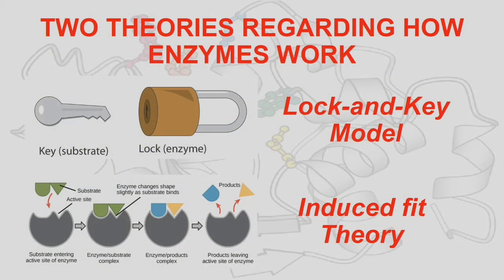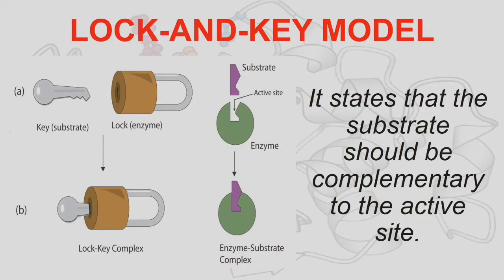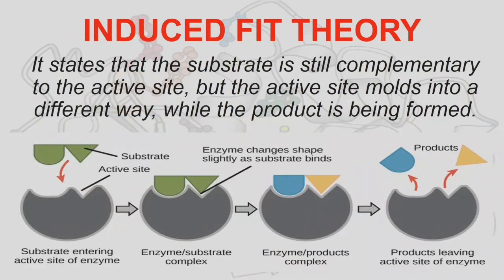We have two theories regarding how enzymes work: the lock and key model and the induced fit theory. The lock and key model states that the substrate should be complementary to the active site — proposed based on the fact that enzymes are very specific for the substrate. In the induced fit theory, the substrate is still complementary to the active site, but the active site molds into a different shape while the product is being formed. Binding is strongest at the transition state because the enzyme and substrate have molded together.